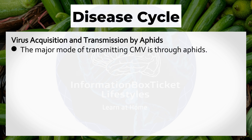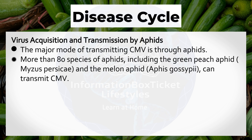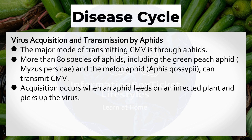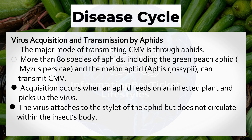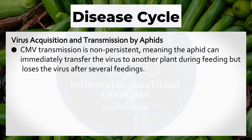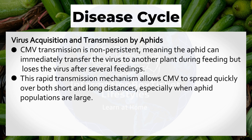The major mode of transmitting Cucumber Mosaic Virus is through aphids. More than 80 species of aphids, including the green peach aphid (Myzus persicae) and the melon aphid (Aphis gossypii), can transmit CMV. Acquisition occurs when an aphid feeds on an infected plant and picks up the virus. The virus attaches to the stylet of the aphid but does not circulate within the insect's body. CMV transmission is non-persistent, meaning the aphid can immediately transfer the virus to another plant during feeding but loses the virus after several feedings.